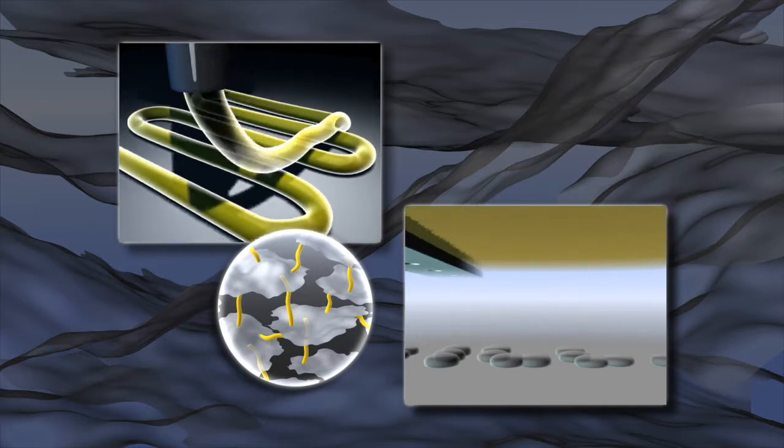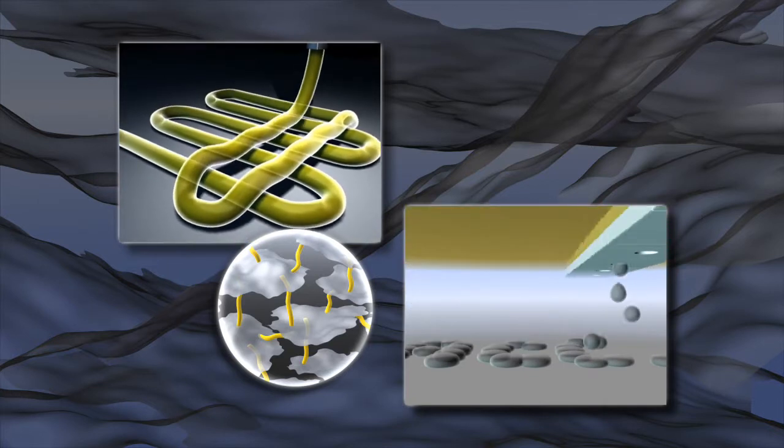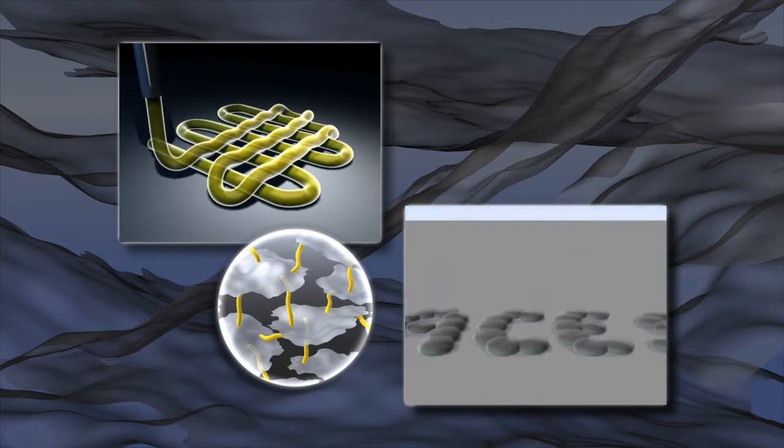Inkjet printing provides a method that enables graphene features to be distributed with high precision in two dimensions.